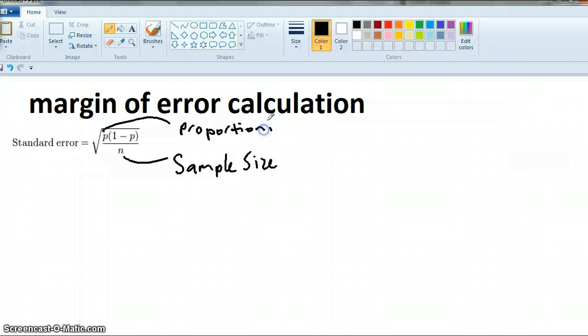Okay, so if we said what proportion of people like cheese, let's imagine that that was 50% liked cheese. And let's imagine that we had a sample of 100 people. So n would be 100, and p would equal 0.5.